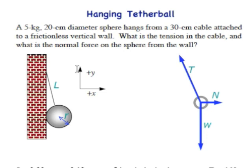I've set up our coordinates: plus y is in the vertical direction, plus x is in the horizontal direction pointing normal away from the wall. For the free body diagram, the forces are the weight of the ball pulling downward, the normal force from the wall pushing directly outward horizontally in the plus x direction, and the tension in the cord pulling up and to the left.